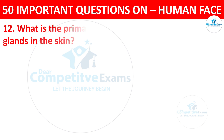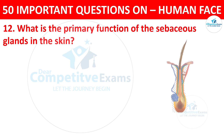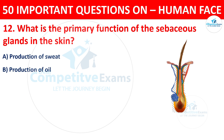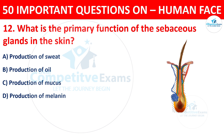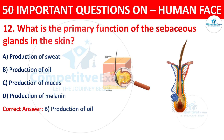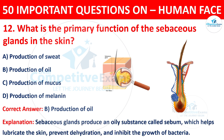Question number twelve: what is the primary function of the sebaceous glands in the skin? The options are production of sweat, production of oil, production of mucus, or production of melanin. The correct answer is B, production of oil. The sebaceous glands produce an oily substance called sebum, which helps lubricate the skin, prevent dehydration, and inhibit the growth of bacteria.